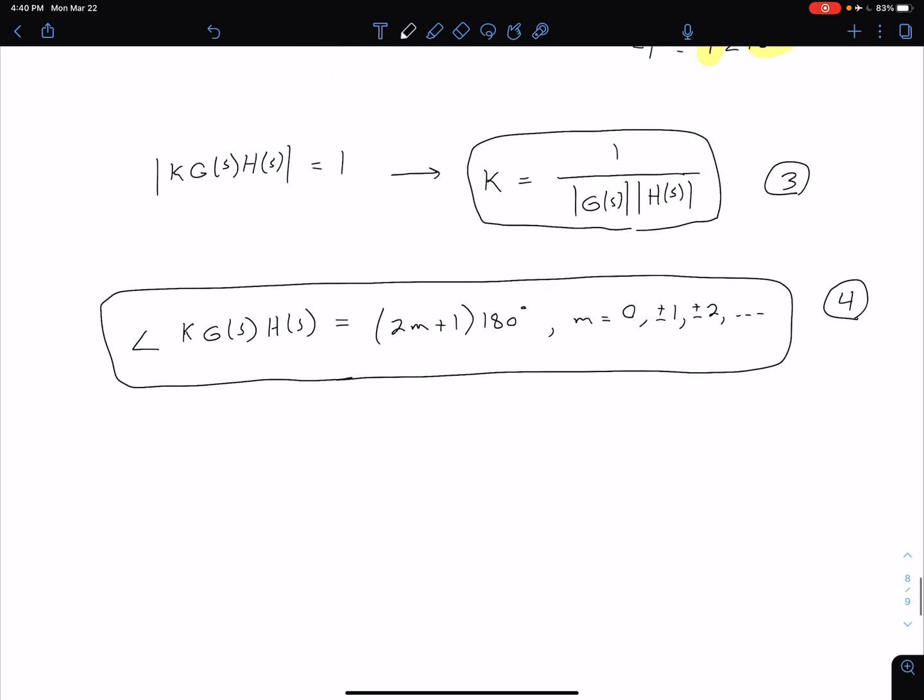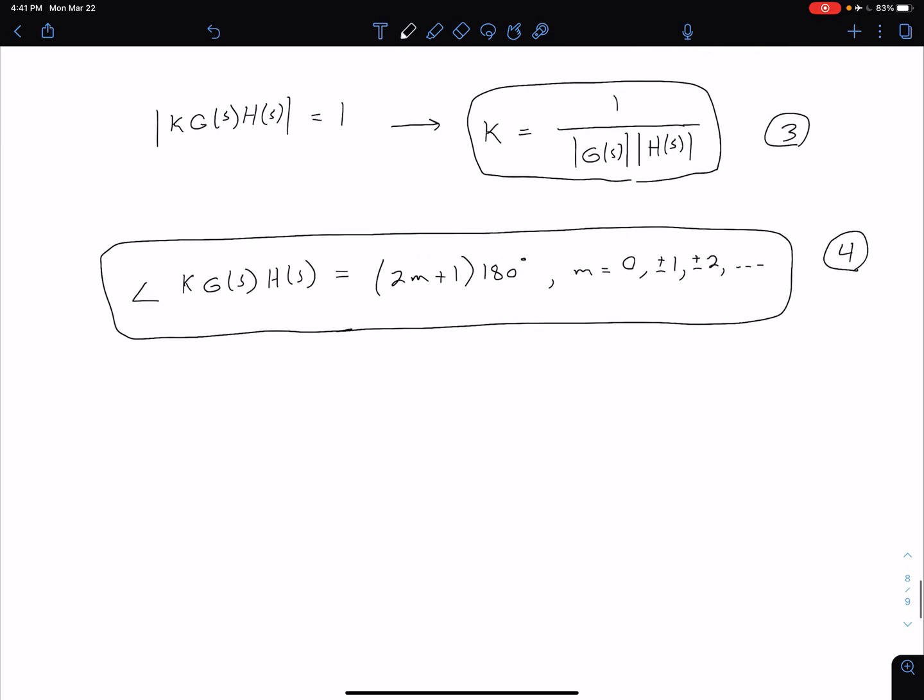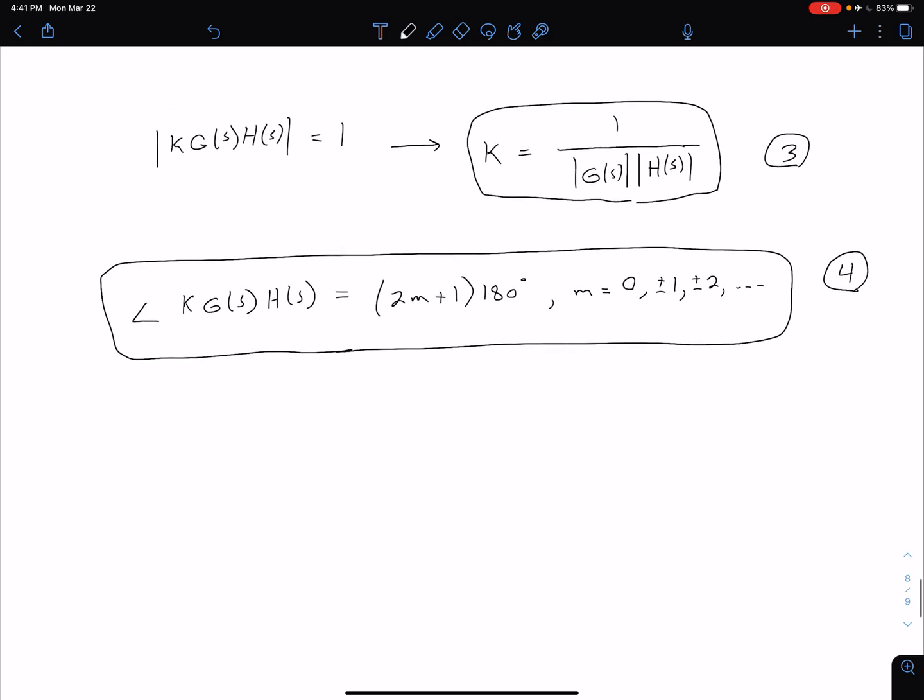So as it turns out, if equations three and four are satisfied for a particular gain at a particular point, then that point is part of the root locus. So if three and four are satisfied for a particular gain and at a given point, then the point is on the root locus.